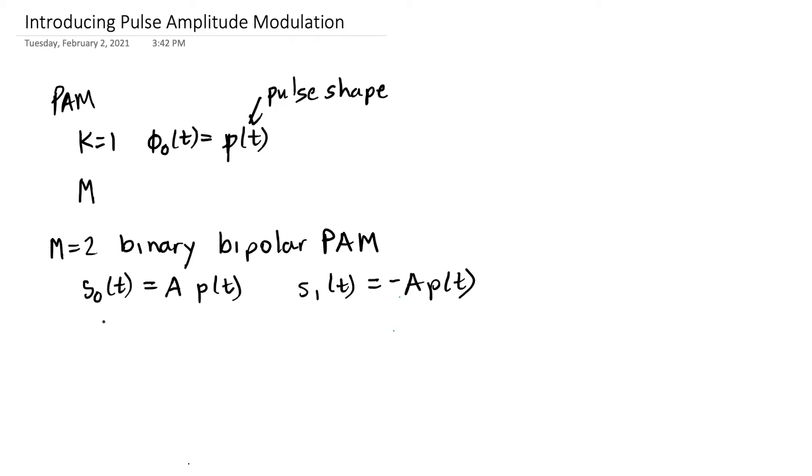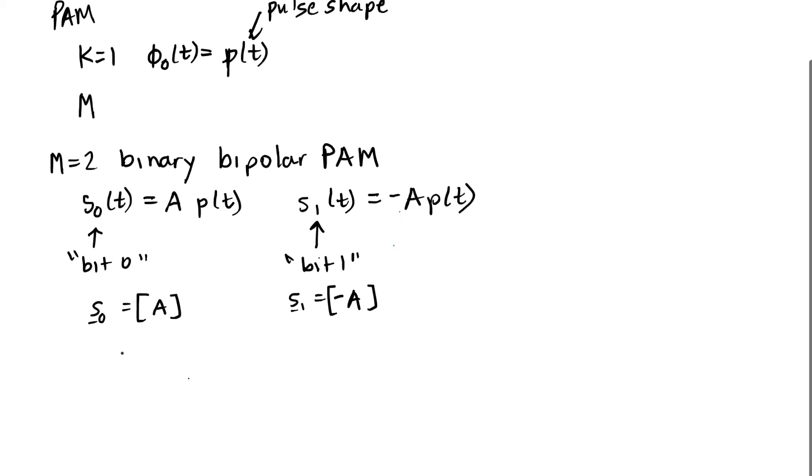We might specify that this is used to send a bit 0, and S1 is used to send a bit 1, but it's arbitrary which bit we choose to send which symbol as long as we agree upon that at the transmitter and receiver. We might also say that S0, the vector, is going to be A, and S1 is going to be the value minus A. We don't even really write the brackets when we're writing this for PAM because we only have one value in that vector.